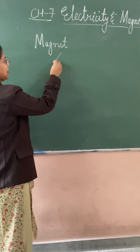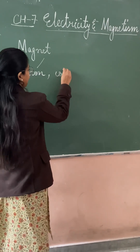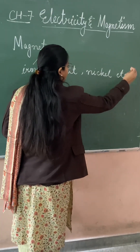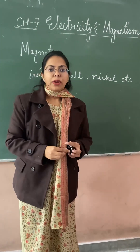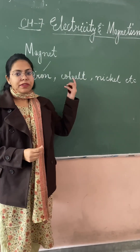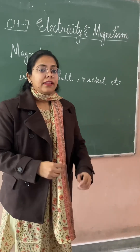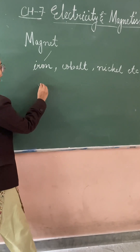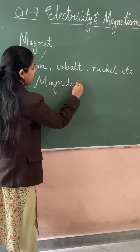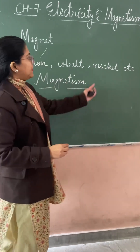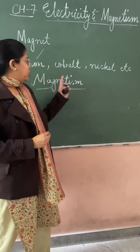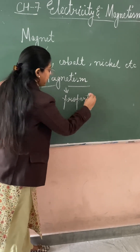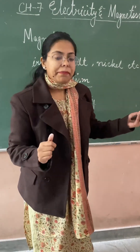Magnetic materials may be iron, cobalt, nickel, and so on. These are the magnetic materials. Any substance which attracts these magnetic materials will be known as a magnet. The property of attracting any magnetic material is known as magnetism. Magnetism is basically a property — the property of attracting iron or any magnetic materials.